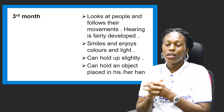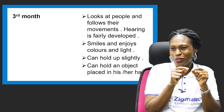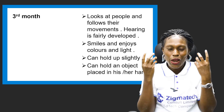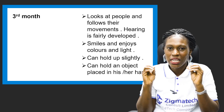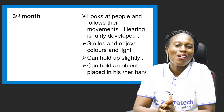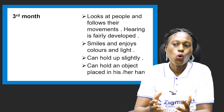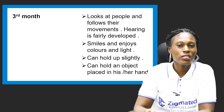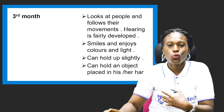At the third month, they look at people and follow their movements. As you go somewhere, they follow you with their eyes. Hearing is fairly developed — they can hear when movements are made and want to look in the direction the sound is coming from. They smile and enjoy colors and light. They can hold up their head slightly and can hold an object placed in their hands. At this point, they can be learning to sit.